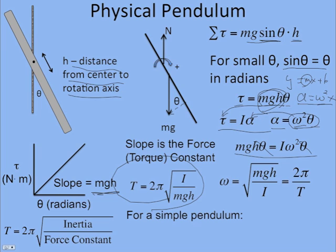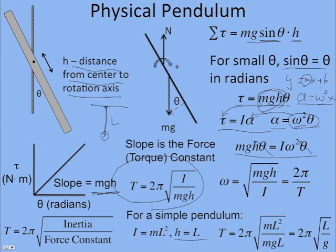So a simple pendulum is really just a physical pendulum, and its rotational inertia would be mr squared, where r is the length of the pendulum, and then h is the distance from the rotation axis to the center. So for a simple pendulum, that would be the length of the pendulum. If I put that in to the period, I get the same thing we found in our previous analysis.